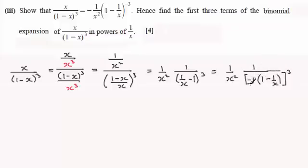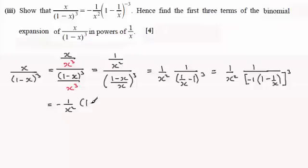So what we've got here is minus 1 all cubed, which is going to be negative 1, and I can multiply it with the 1 over x squared. That gives us minus 1 over x squared, and then we've got 1 over (1 minus 1/x) all cubed. Bringing that up to the top, I can write that as (1 minus 1/x) to the power minus 3. And that is what we had to show — though it's quite tricky for that first bit.